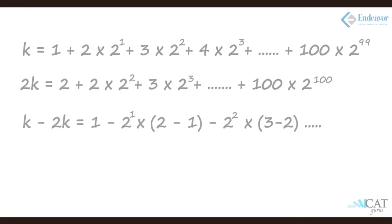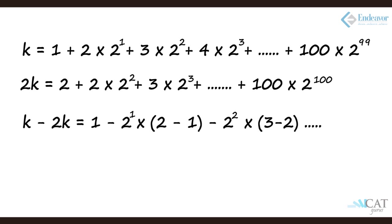Subtracting 2k from k simultaneously: the first term gives 1; for the second term, 2·2^1 minus 2 = 2(2 minus 1) = 2^1; for the third term, 3·2^2 minus 2·2^2 = 2^2; and so on. This yields 99 terms forming a geometric progression from 2^1 onwards: 2^1, 2^2, 2^3 and so on up to 2^99.